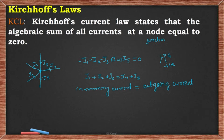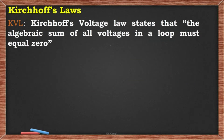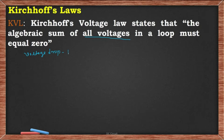Let us move to KVL — Kirchhoff's Voltage Law. KVL states that the algebraic sum of all voltages in a closed loop is zero. The term 'all voltages' includes voltage drop seen across resistors and voltage rise seen at sources.